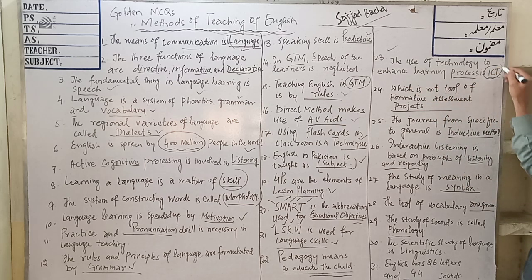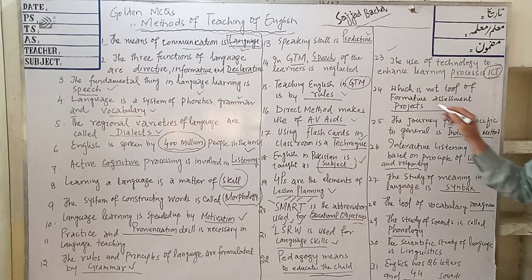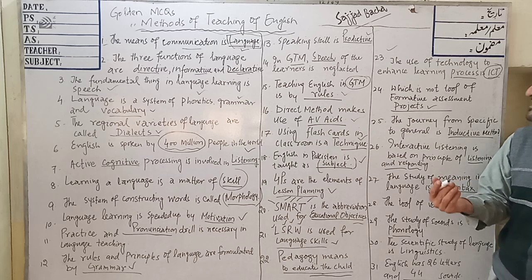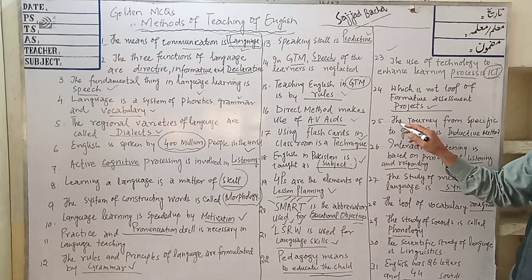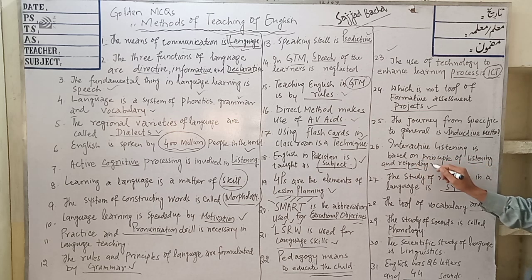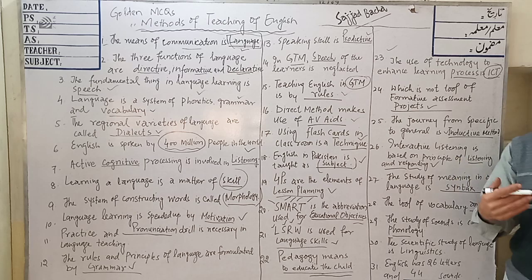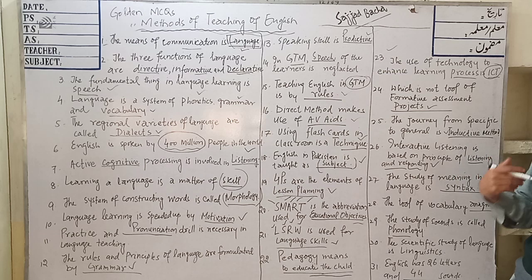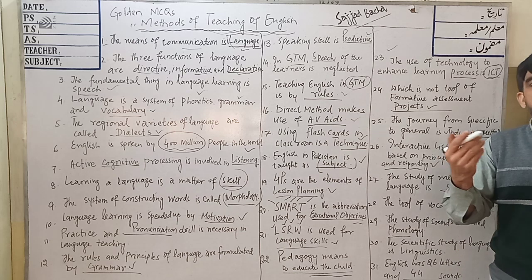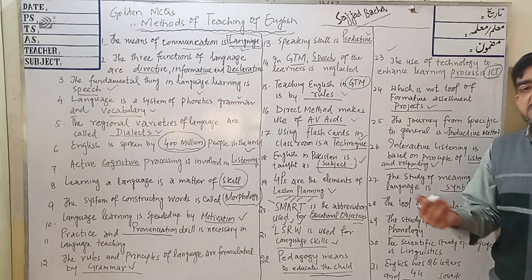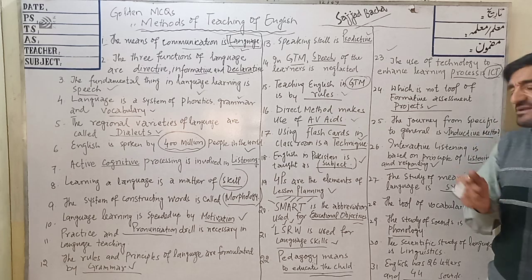MCQ 23: The use of technology to enhance the learning process is called ICT — Information Communication Technology. MCQ 24: Projects are not the tools used for formative assessment. MCQ 25: The journey from specific to general is the inductive method. MCQ 26: Interactive listening is based on the principles of listening and responding. Passive listening is when a learner only listens but does not respond, while interactive listening involves both listening and responding.